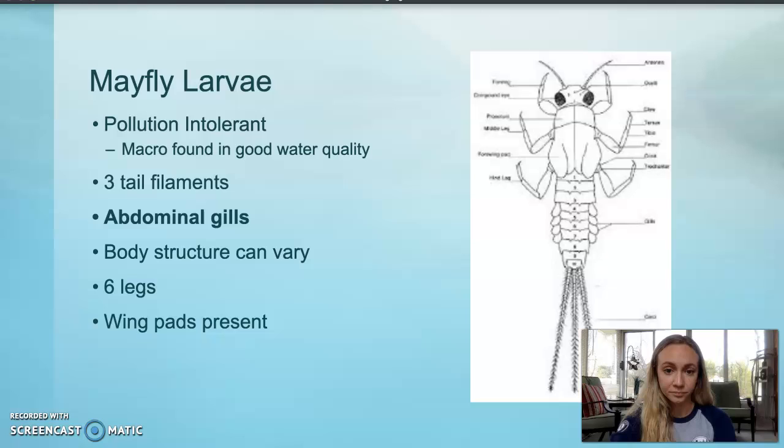One of the easy features of a mayfly to identify is their three tail filaments. This differs from other larvae only having one to two tails, although sometimes you can find a mayfly in the field with less than three tails.